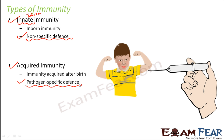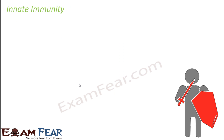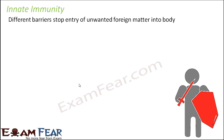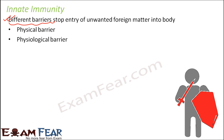In innate immunity, it is non-specific defense — it can protect the body from common infections but is not very strong and develops as the baby grows. In innate immunity there are different barriers which stop the entry of unwanted foreign matter. These barriers are: physical barrier, physiological barrier, cellular barrier, and cytokine barrier — four types that together give innate immunity.